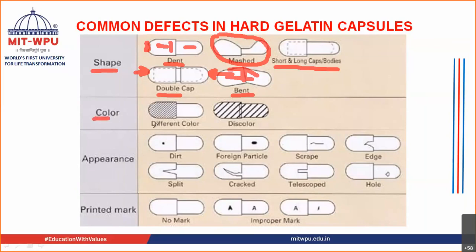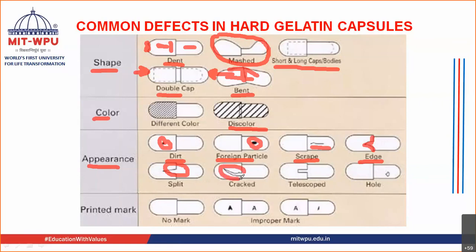In terms of color, you can see different color caps or bodies, or color variation — different color altogether, or discoloration seen in a capsule. In terms of appearance, there may be dirt attached to the capsule, or a foreign particle present inside or on the capsule. You can see scrape on the capsule surface, or torn edges. You can also see a split inside the capsule or a cracked capsule.